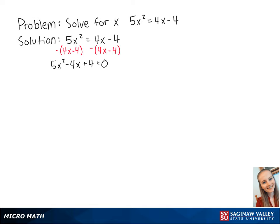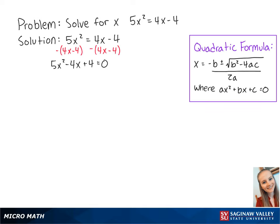Since we can't factor out the left side, we're going to use the quadratic formula to solve for x. For this equation, a equals 5, b equals negative 4, and c equals 4.